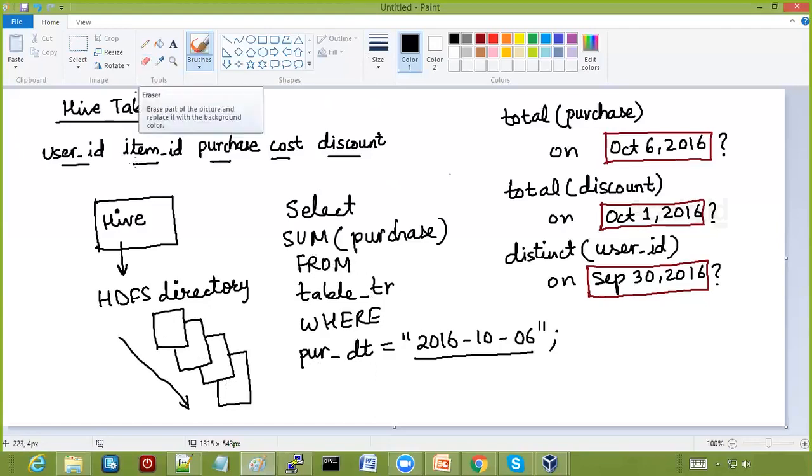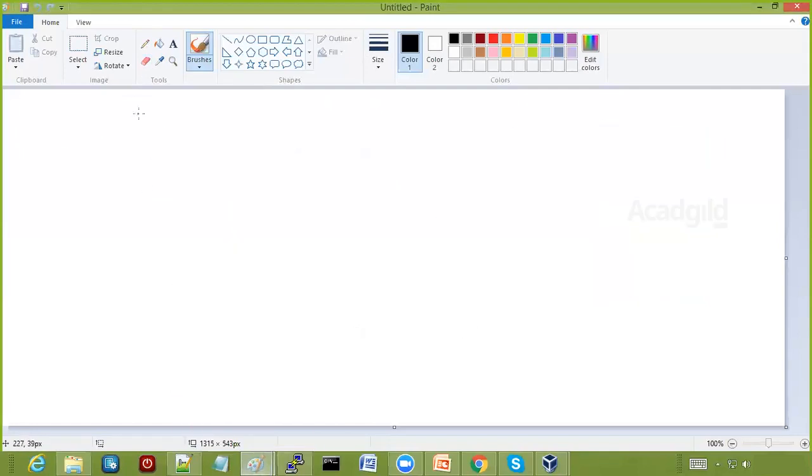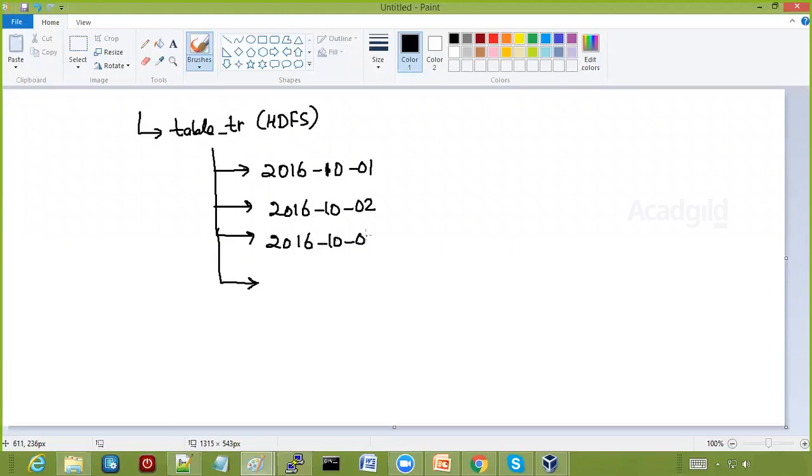What we can do is: there is a directory called as table_TR in the HDFS. So this is an HDFS directory. What we can do is create subdirectories inside this particular directory - one subdirectory for every date. Like one subdirectory for this date, first of October, one subdirectory for the second of October, one subdirectory for third of October. And once we do that, similarly we can create different directories. And all those transactions which happened on first of October should become the files inside this directory.